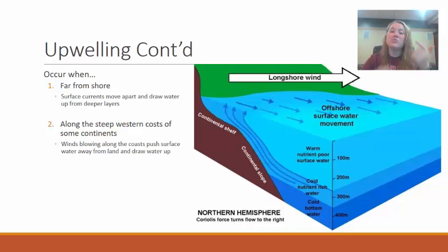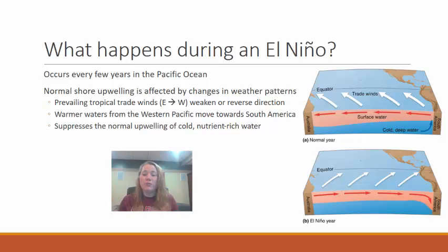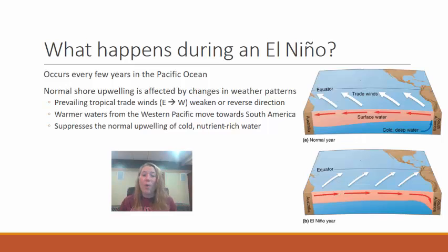This cold, nutrient-rich water is pulled up to fill the void from where that warm surface water was pulled away, helping to cycle the nutrients. El Niño is a phenomenon that happens every few years in the Pacific Ocean. Normally the trade winds blow from east to west, pulling that surface water away from the shore of the continent and driving normal upwelling. However, in an El Niño year those trade winds actually weaken or even reverse direction, which stops upwelling from taking place.